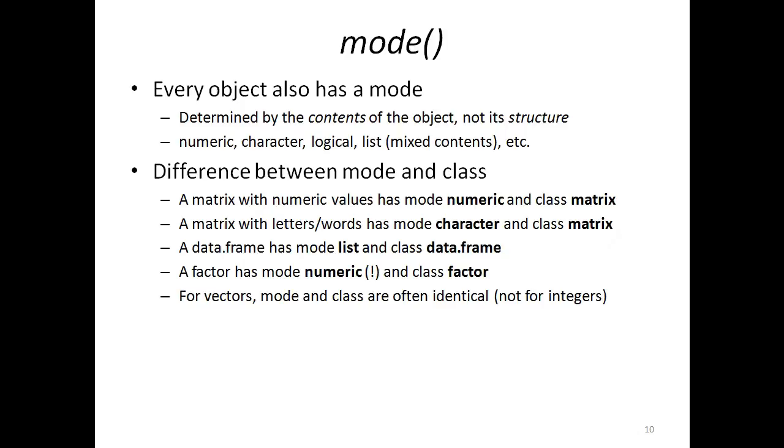An interesting fact is that factors have mode numeric and class factor, and it might not be obvious why the mode is numeric. But the explanation is that the levels of the factor are stored internally as numeric values. So even though you see levels or labels for the levels which might look like character strings, could be words of different kinds, the internal storage is numeric.